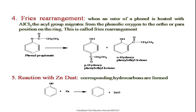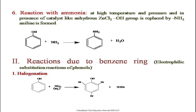Next comes the reaction with zinc dust. On reacting phenol with zinc dust, simple hydrocarbons are obtained. The zinc removes the oxygen from phenol and benzene is obtained. Next is reaction with ammonia. Phenols when reacted with ammonia at high temperature and pressure, in the presence of a catalyst like anhydrous zinc chloride, are converted to anilines. The OH group is replaced by the NH₂ group, and this compound is known as aniline.